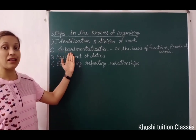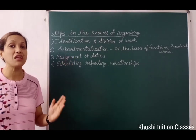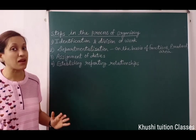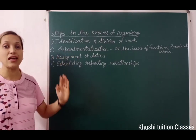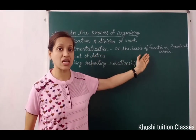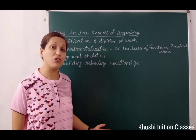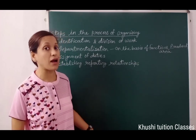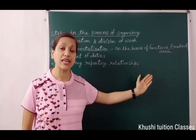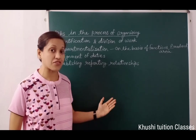The second step is departmentalization. Manageable activities को different groups में divide करने के बाद, similar work को एक department में रखा जाता है — इसे ही कहते हैं departmentalization. यह departments functions की basis पर हो सकते हैं, जैसे production department, finance department, human resource department, marketing department, etc. यह departments product की basis पर भी हो सकते हैं, जैसे medicine, food items, cosmetics, etc.